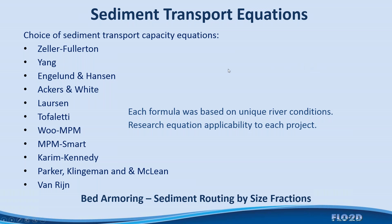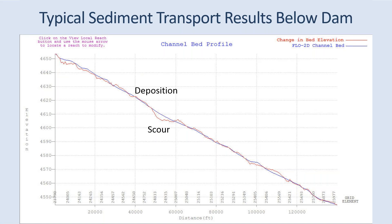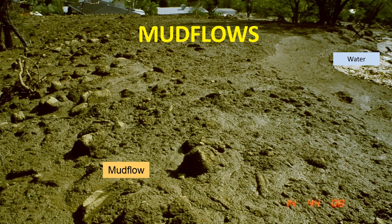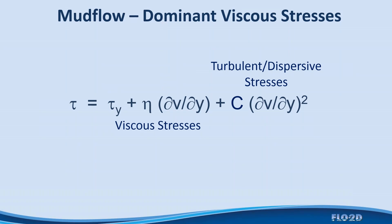For sediment transport there is a choice of 11 sediment transport equations. If you do sediment routing by size fraction, it will perform bed armoring. A typical result below a dam would show scour and deposition on the bed in waves — this represents more of a water-dominated flow than a mudflow scenario. For mudflows, the behavior is driven by high viscosity and high yield stresses, where viscous stresses overwhelm the turbulent dispersive stresses in the constitutive shear stress equation.